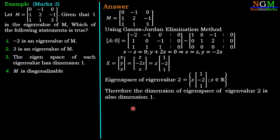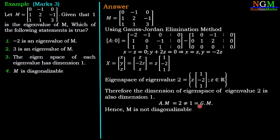The eigenspace of both eigenvalues has dimension 1, so option 3 is correct. For option 4: the algebraic multiplicity of eigenvalue 2 is 2 but its geometric multiplicity is 1. Since they are not equal, matrix M is not diagonalizable. Option 4 is therefore incorrect. Option 3 is the only correct answer.